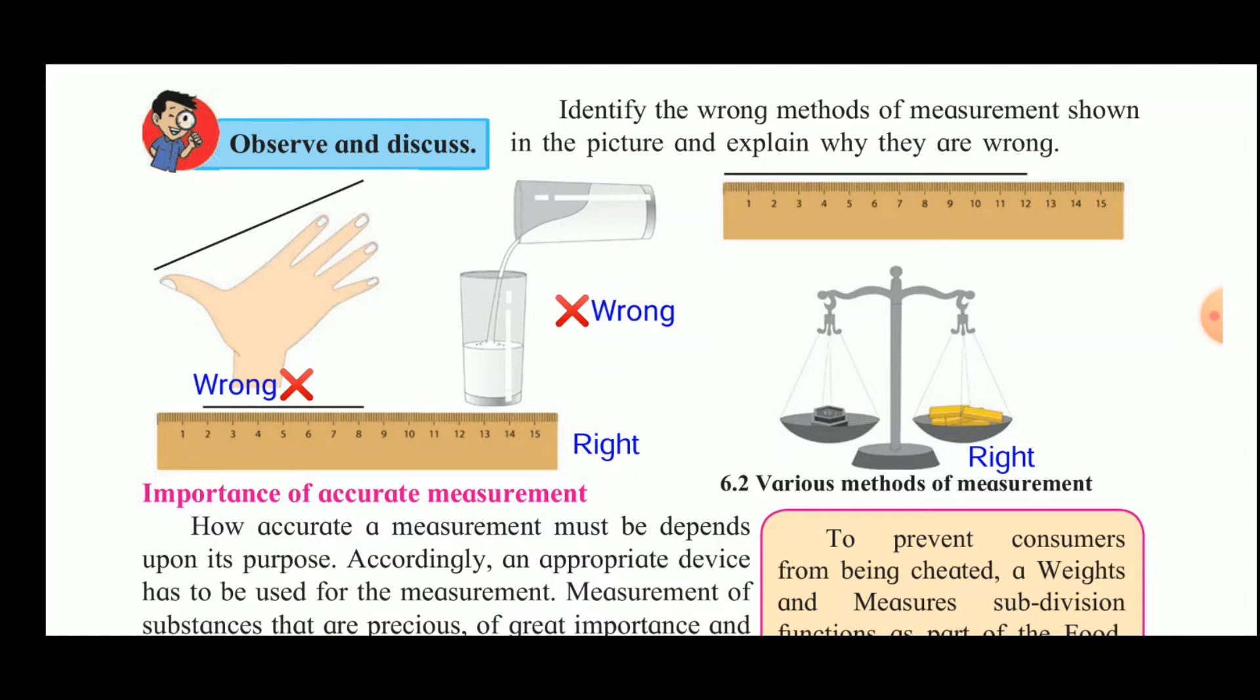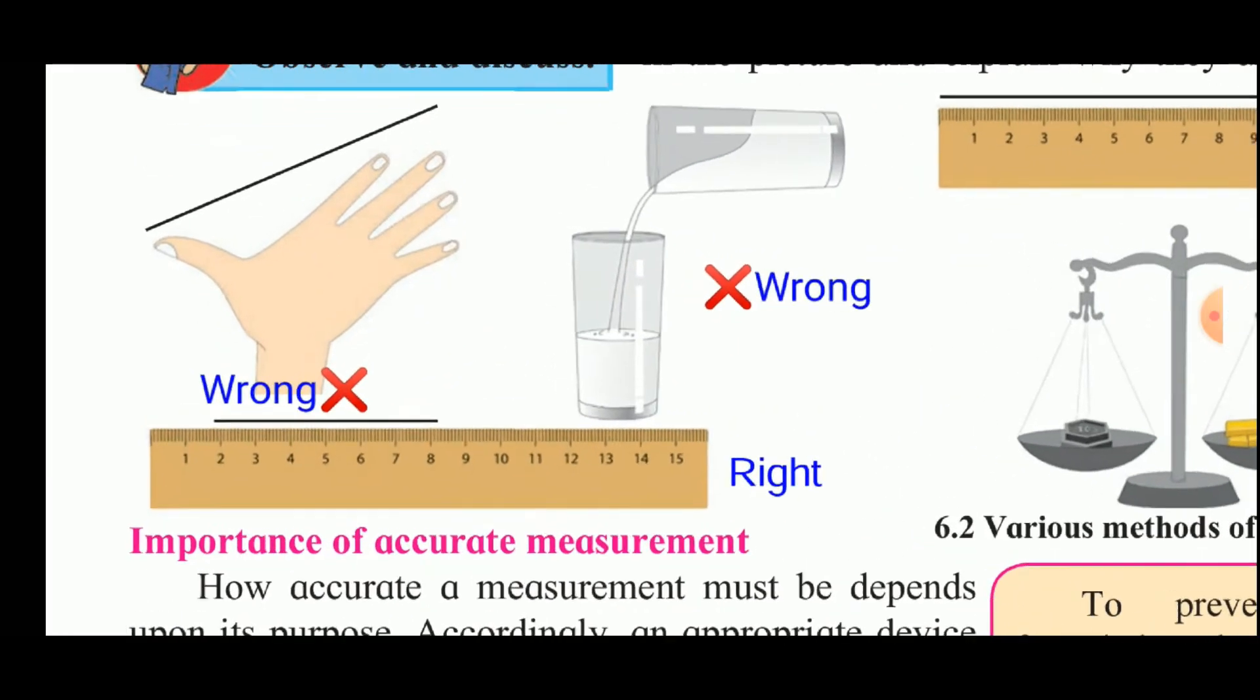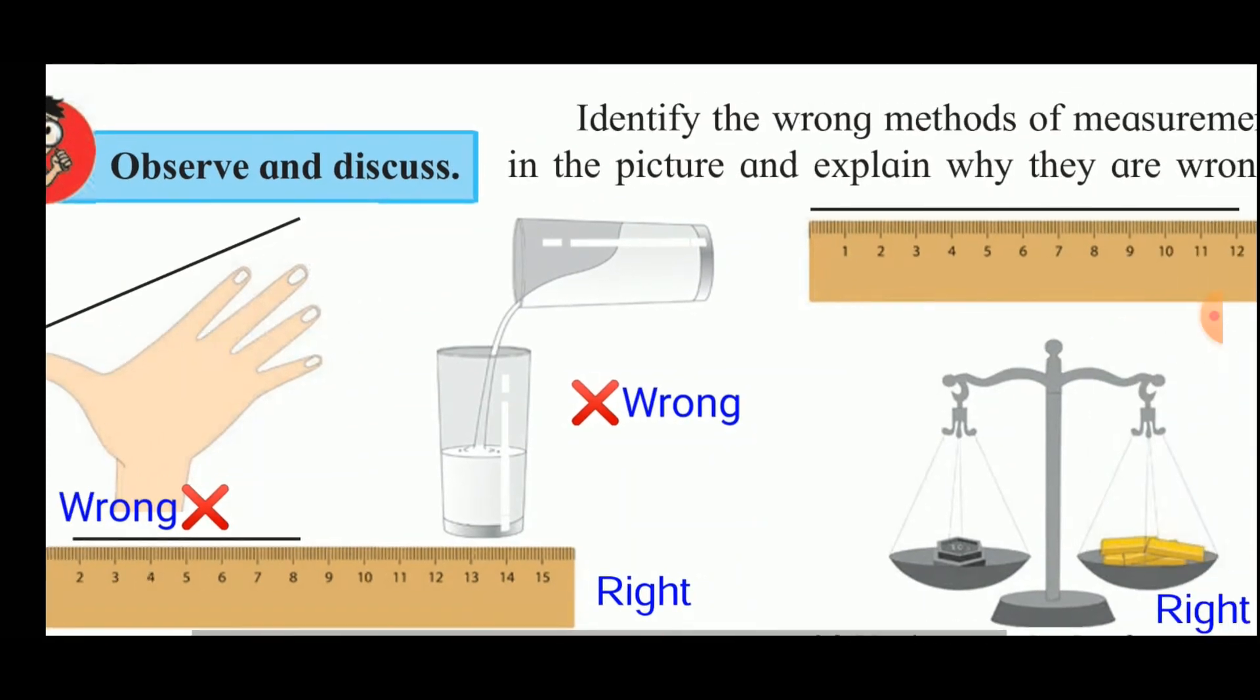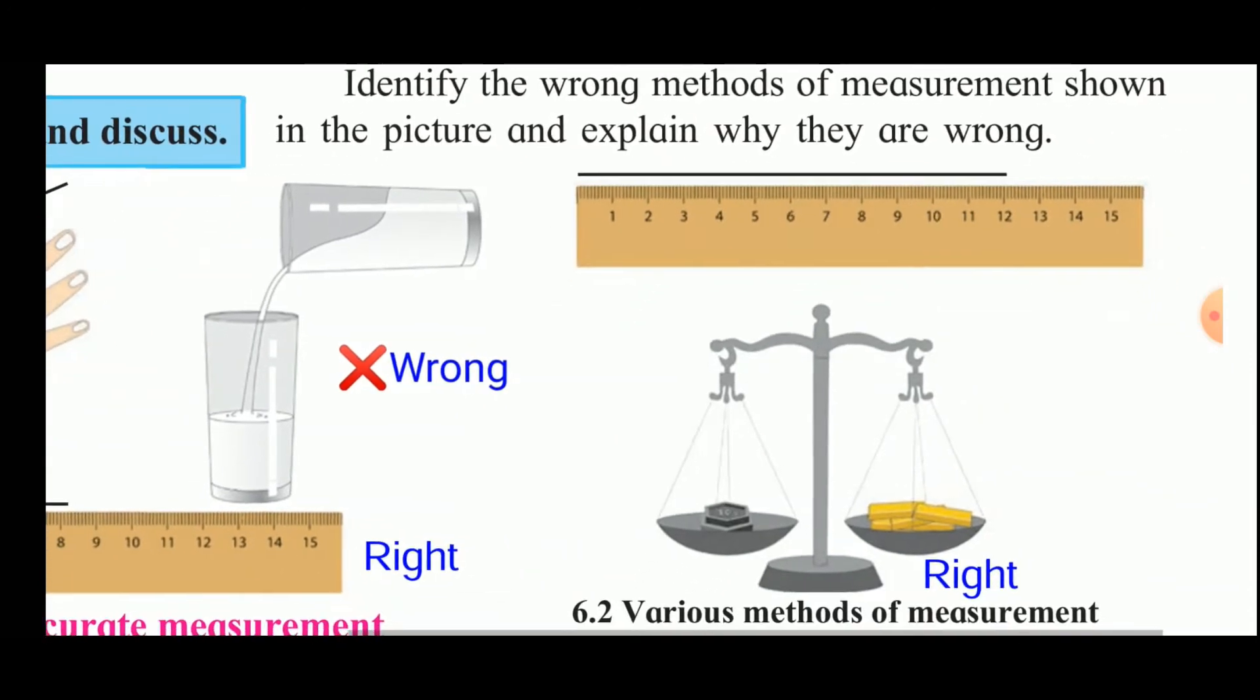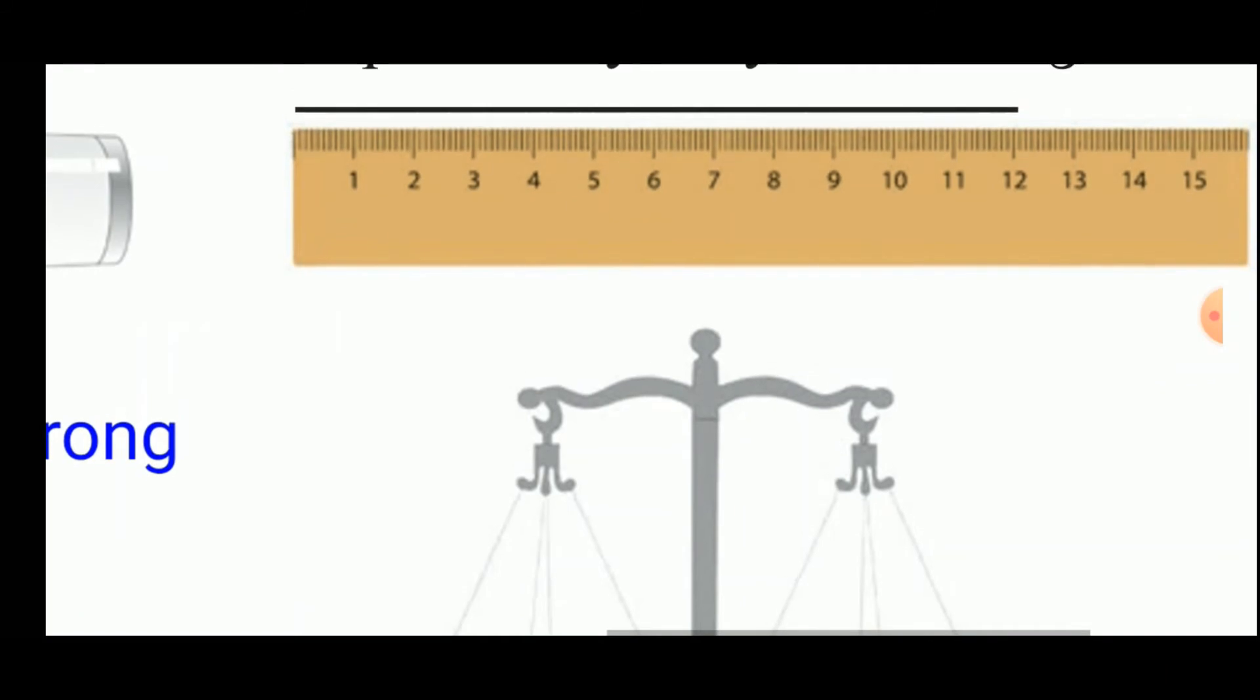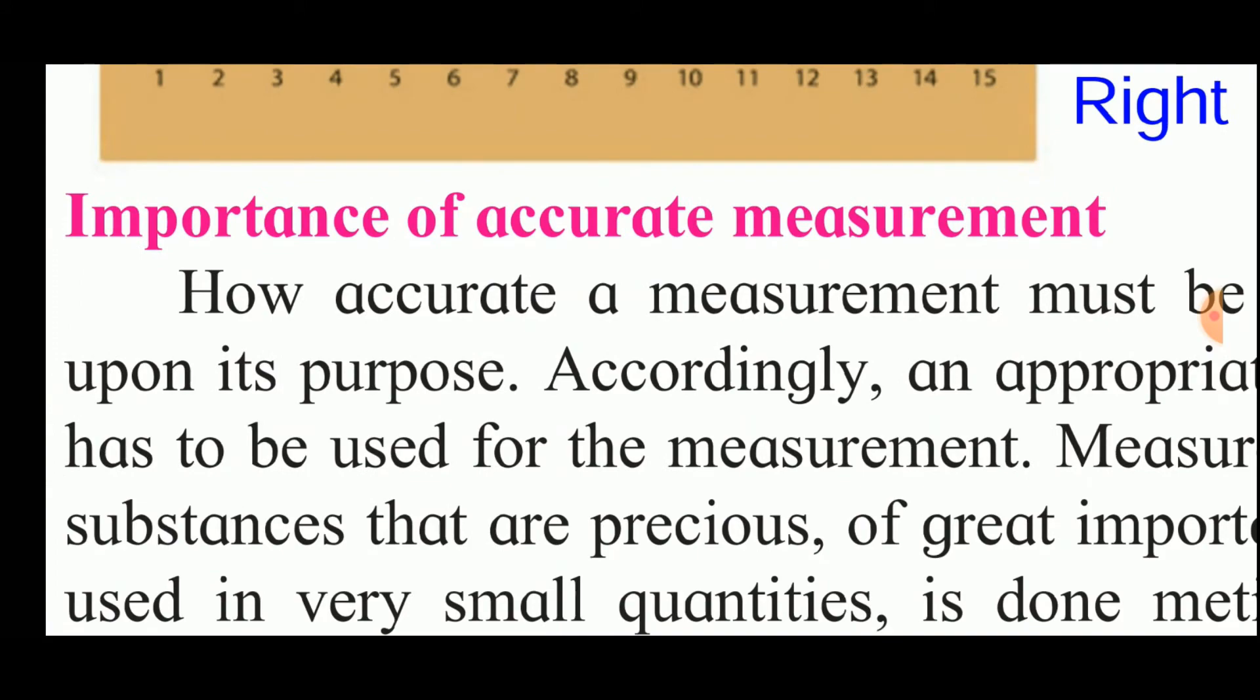Identify the wrong methods of measurement shown in the picture and explain why they are wrong. In the first picture, the handspan is used for measuring the length of the string. It is wrong because the length of the handspan will be different for different people. Naturally, this length of the string will be different for different people. Scale is used for measuring the length of the string. This is the right method. The glass is used for measuring the volume of the milk. Measuring cylinder should be used for measuring the volume of the milk or any liquid.